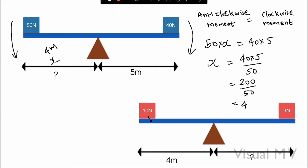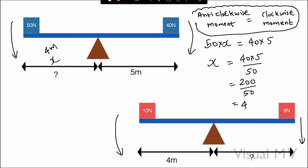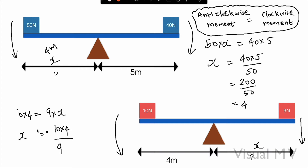In the next case, there is 10 Newton on the anti-clockwise side at 4 meters, and 9 Newton on the clockwise side at an unknown distance X. So the equation is 10 × 4 = 9 × X. Solving: X = (10 × 4) / 9 = 40 / 9 = 4.4. So we got the distance — it is 4.4 meters.